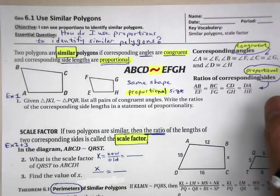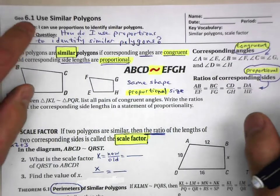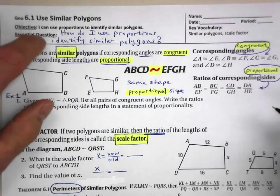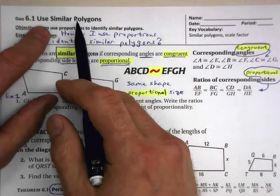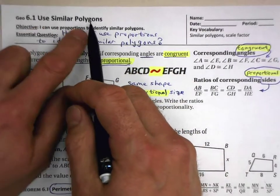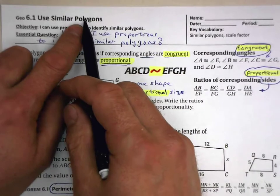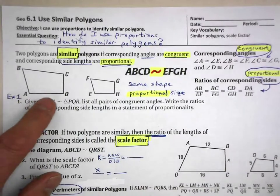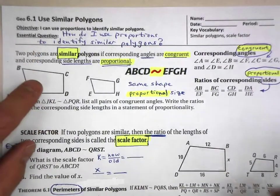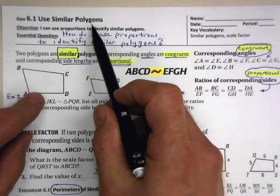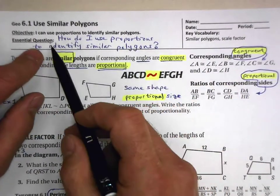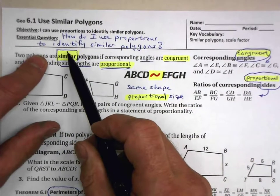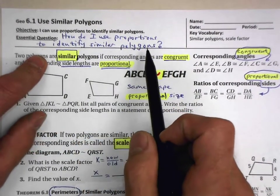We are in chapter 6, which is a very useful chapter talking about similarity. Let's figure out how to use similar polygons. A polygon — you will remember — means many sides, so a polygon can be a triangle, a quadrilateral, a pentagon, and all kinds of different shapes. Our essential question is: how do I use proportions to identify similar polygons?